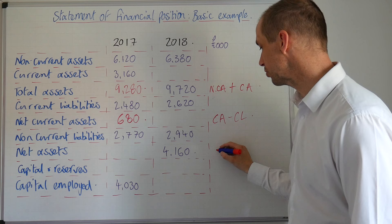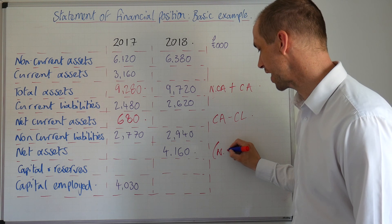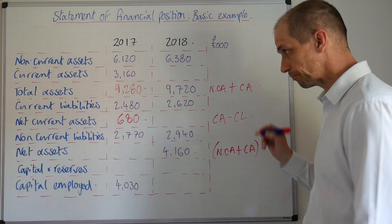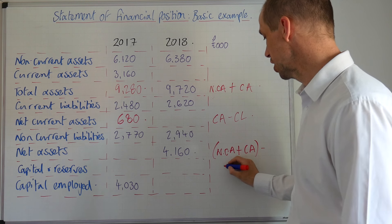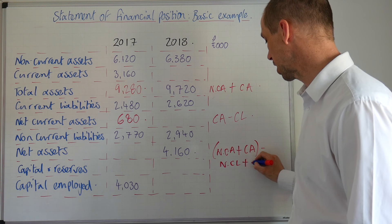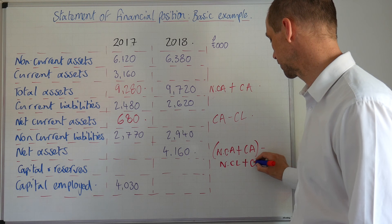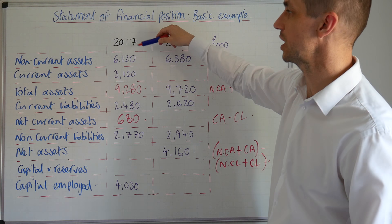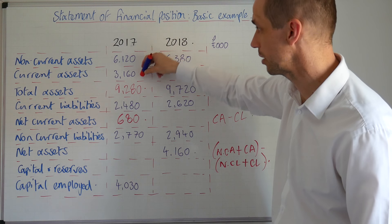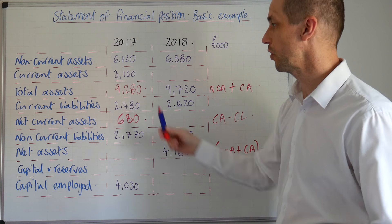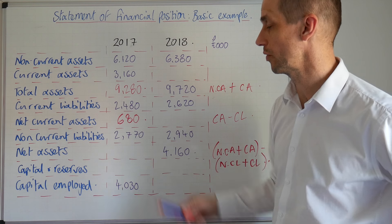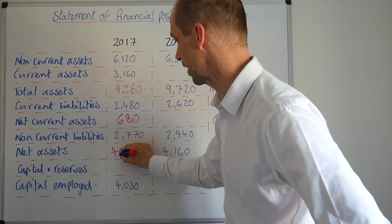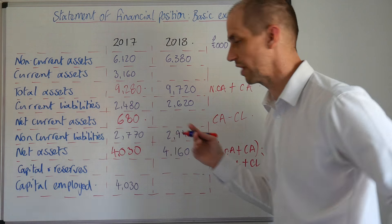Net assets — how do we work that out? It's your non-current assets plus your current assets, minus your non-current liabilities plus your current liabilities. That is the formula. So we've got our non-current assets, our current assets, our current liabilities, and our non-current liabilities. When we put that information through, that ends up at 4,030.